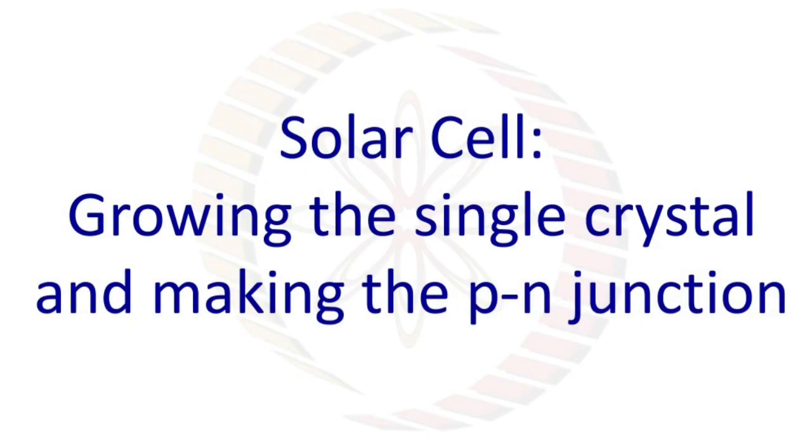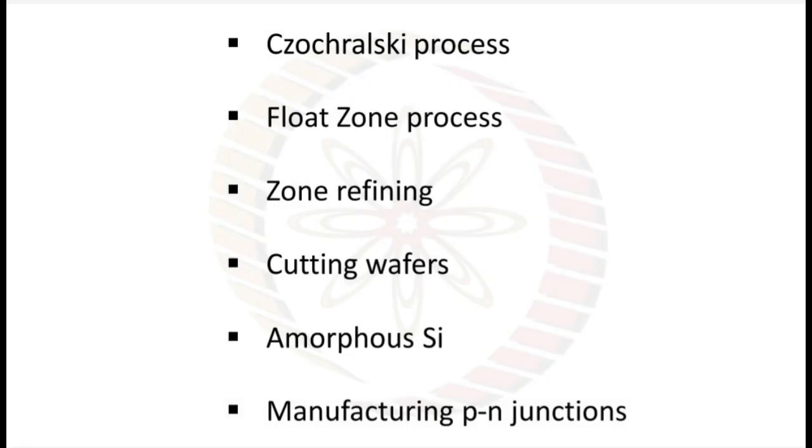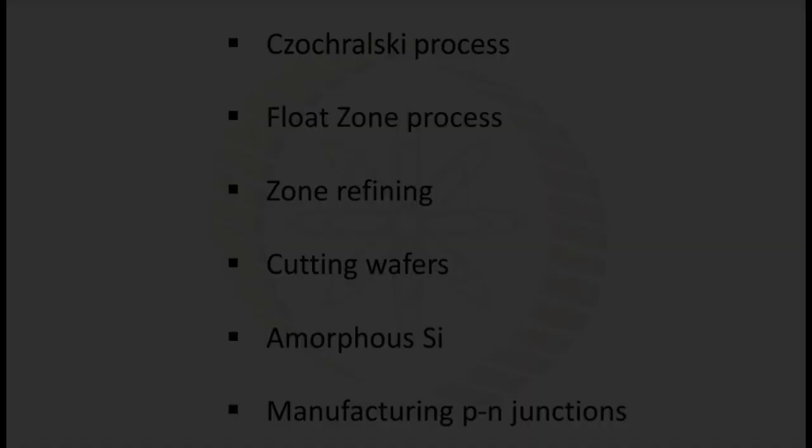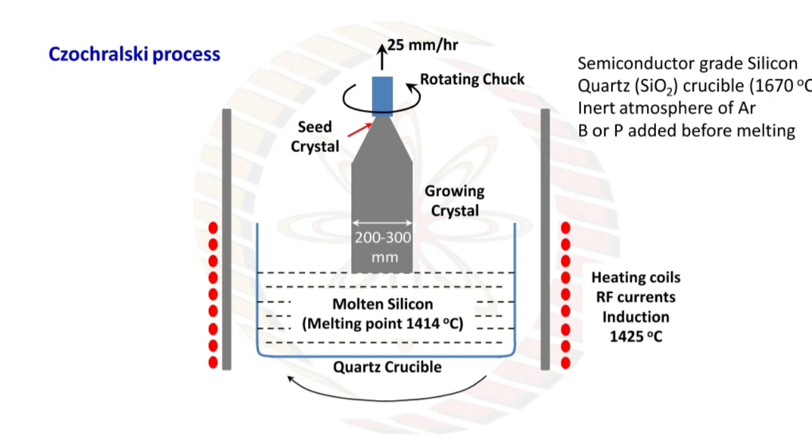Now we have to see some processes by which we can grow a single crystal and make the P-N junction. Those processes are Czochralski process, float zone process, zone refining process, cutting wafers, amorphous silicon, and manufacturing P-N junctions. Here in this picture, Czochralski process is demonstrated.